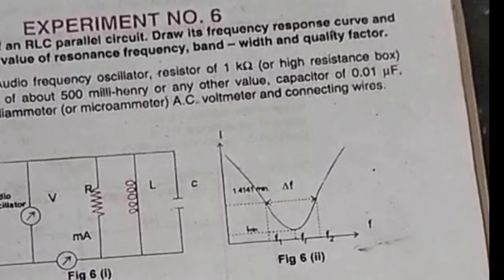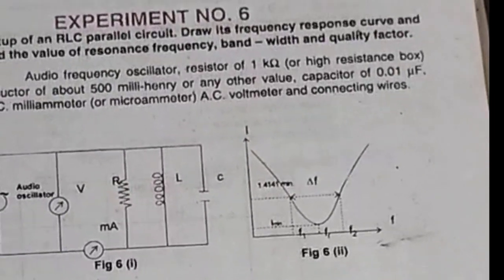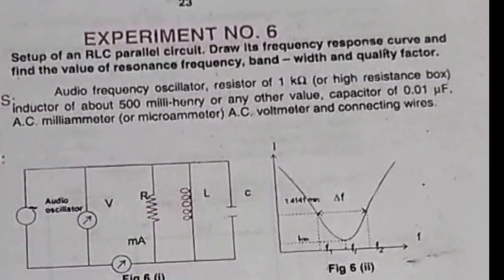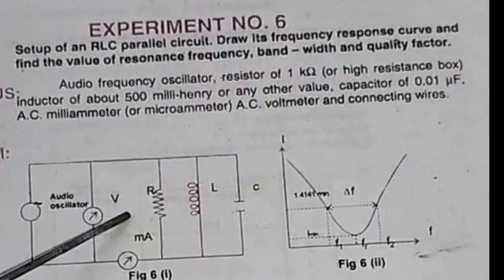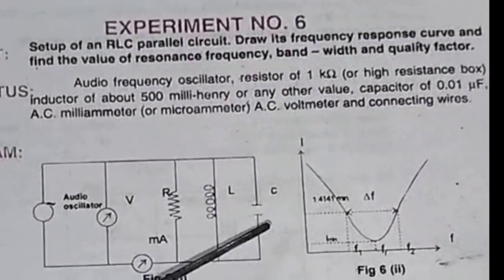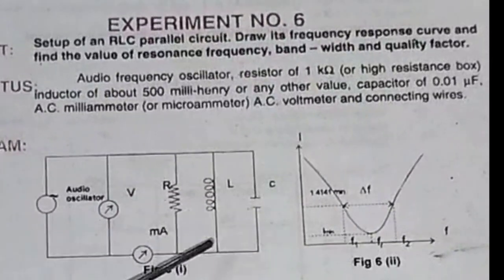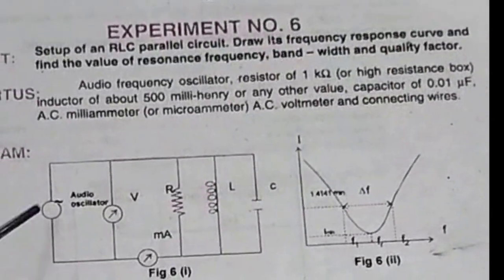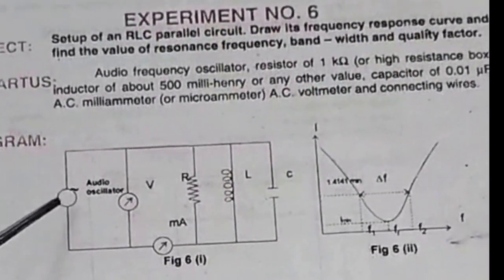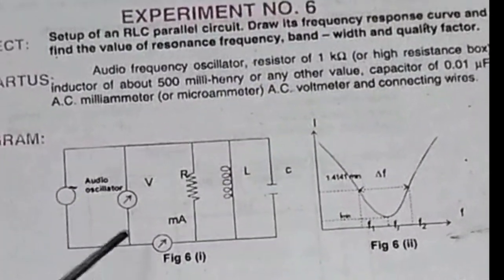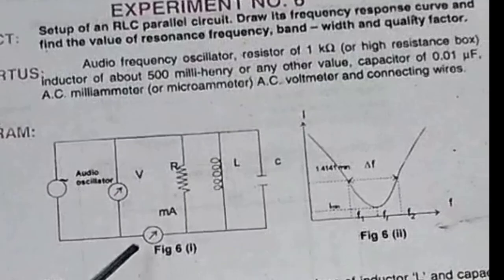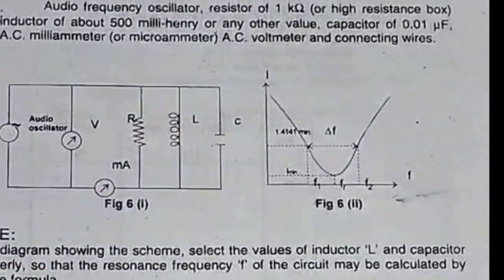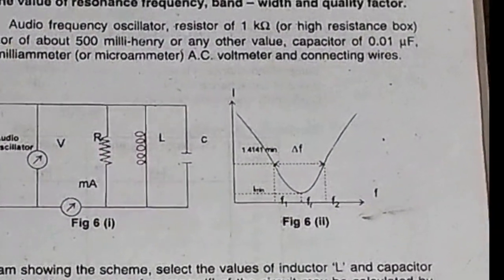Hi everyone. Today's experiment is the RLC parallel circuit, which we may also call a rejector circuit. In this circuit, as you can see, a resistor, an inductor, and a capacitor are connected in parallel combination, while an ammeter is connected in series. We provide AC voltage and then take corresponding readings from the ammeter, then plot a graph between frequency and current in microamperes. Let's proceed towards the observations.